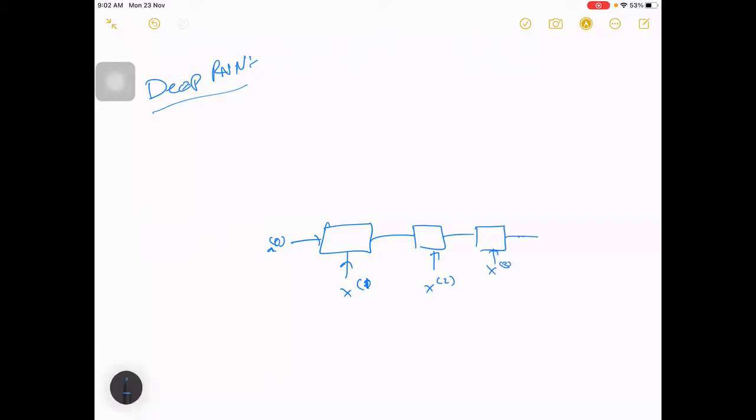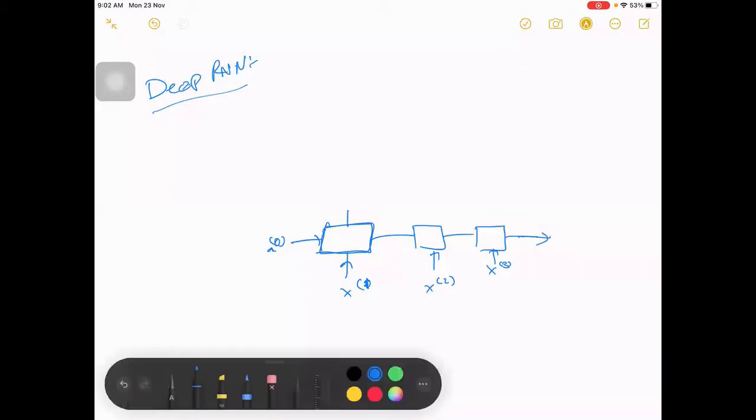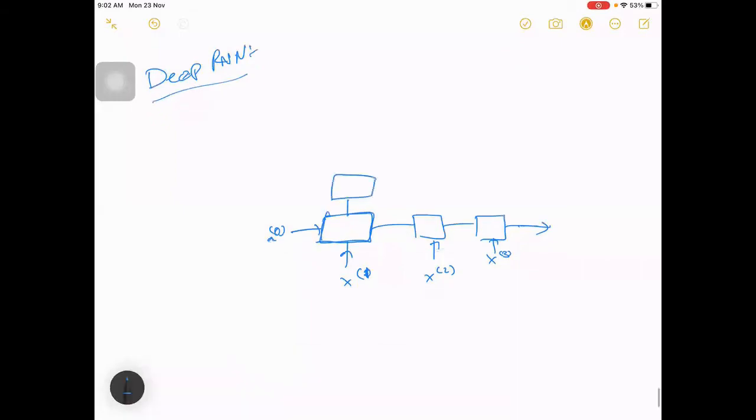So taking this, now this is not a deep network because we just have a simple set. What we can have is a stack of these. Instead of here we can also add one more part and take output from this, or maybe instead of adding only one, maybe add two three. So we can increase the depth and then maybe from here you can take output.